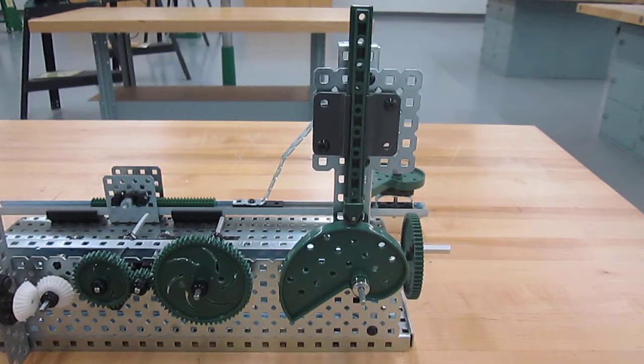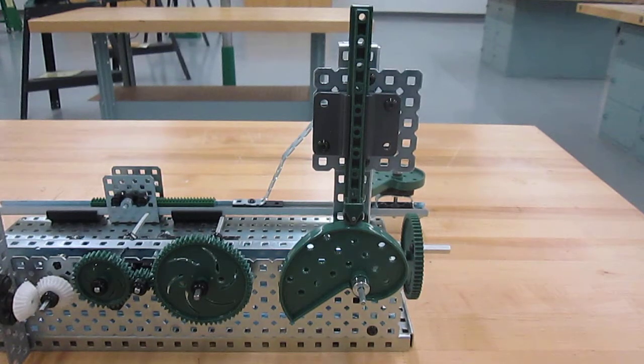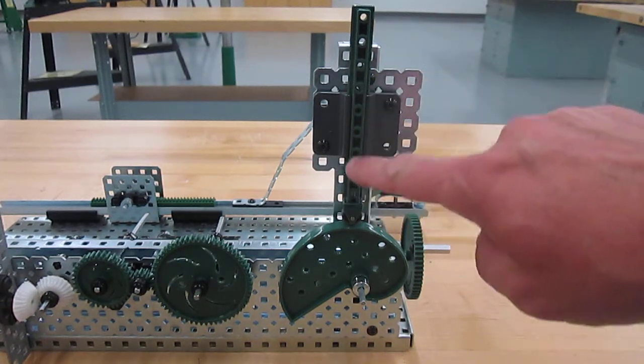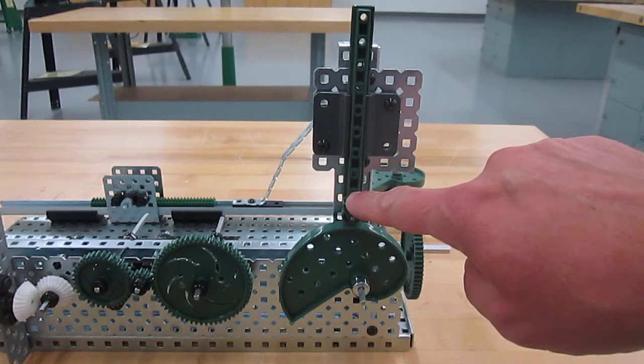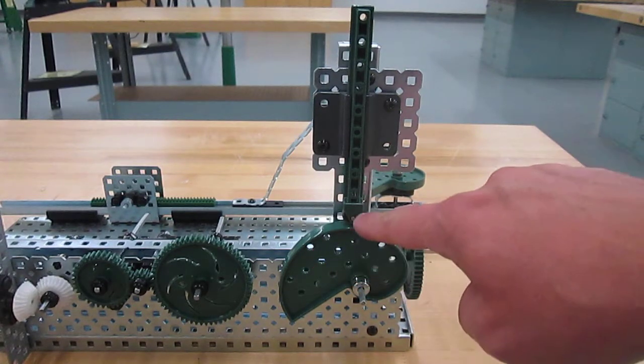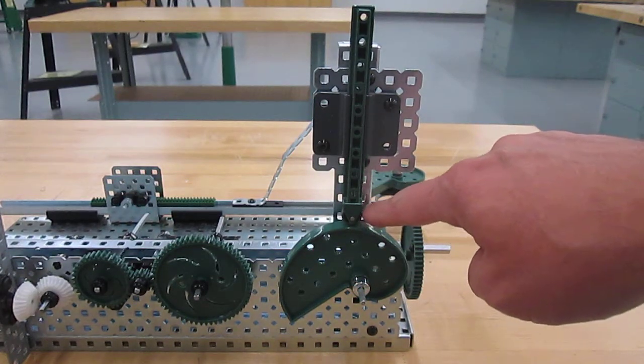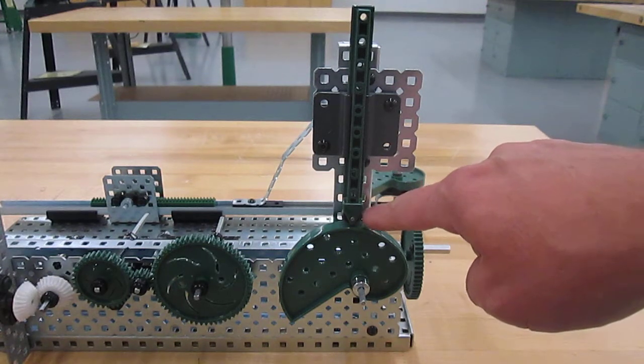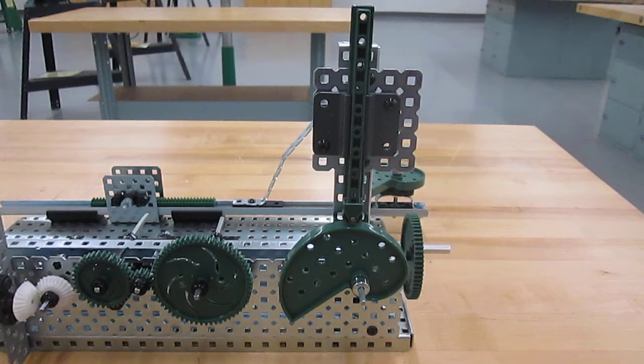Here we have our cam and follower. We have a follower arm that's going vertical, and we have the cam. On the follower arm, there is a small roller that will follow the edge of the cam.